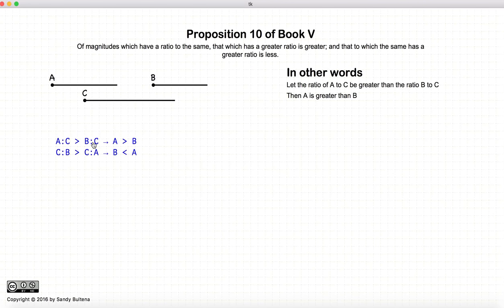So if A to C is greater than B to C, A is greater than B. If we take the inverse of the ratios, we know that B is less than A. Of course, these two statements are the same thing.